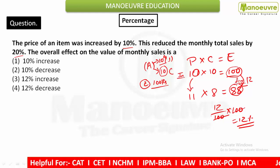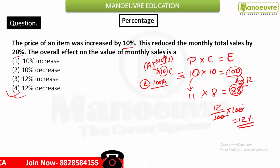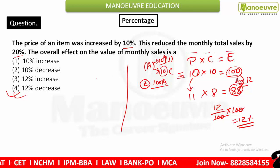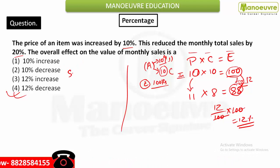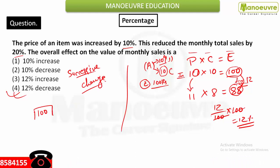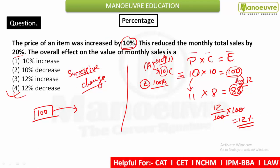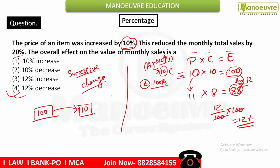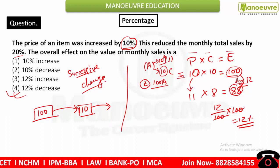So the answer is a 12% decrease — option four. That was the traditional method. Now I'll explain the shortcut using successive change, where price, consumption, and expenditure play no role. Take the initial value as 100. The first change is a 10% increase: 10% of 100 = 10, so it becomes 110. Now reduce 110 by 20%.